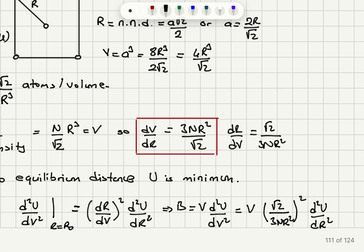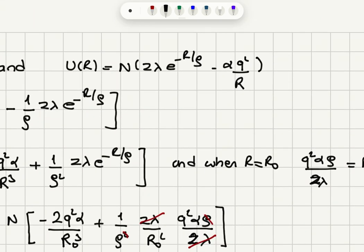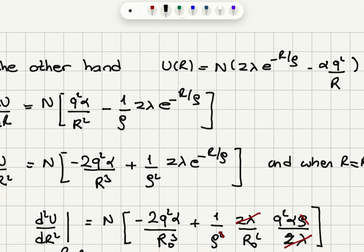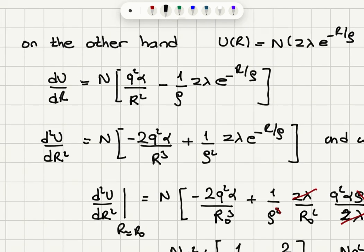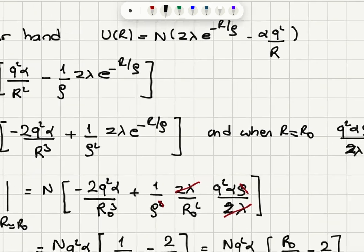The Lennard-Jones potential is U = N times coordination number z times λ·e^(-r/ρ) for the repulsive part, minus α·q²/r for the attractive ionic interaction. The first derivative dU/dr gives N times [q²α/r² minus (zλ/ρ)·e^(-r/ρ)]. The second derivative d²U/dr² gives N times [-2q²α/r³ + (1/ρ²)·zλ·e^(-r/ρ)].